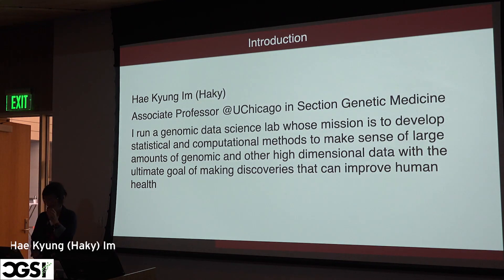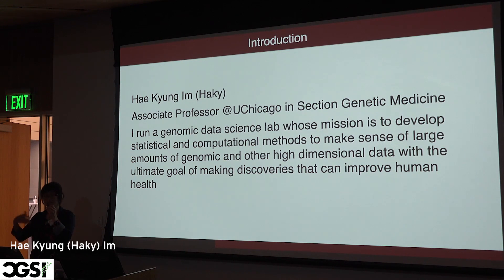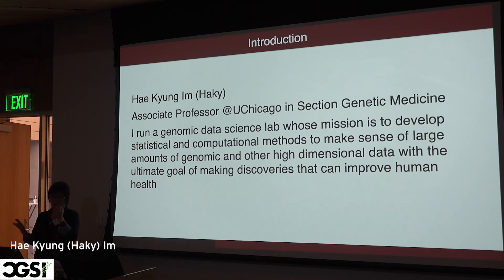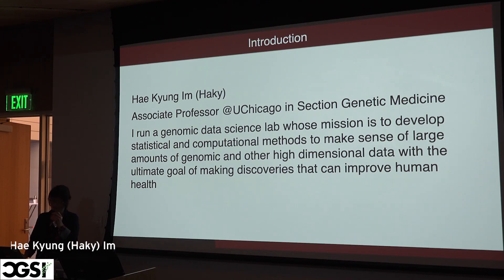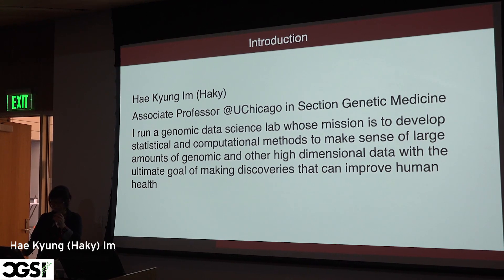Let me start with a brief introduction. My name is Haegyeong Im, but people call me Haki because in Argentina where I grew up nobody could pronounce my name, so it was simplified to Haki — like the sport. At the moment I am at the University of Chicago in the section of genetic medicine. I run a genomic data science lab, and our mission is to develop statistical and computational methods to make sense of large amounts of genomic and other high-dimensional data, with the ultimate goal of making discoveries that can improve human health.